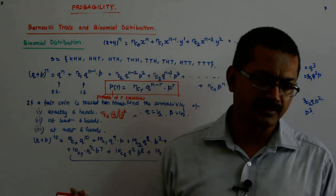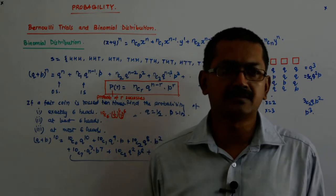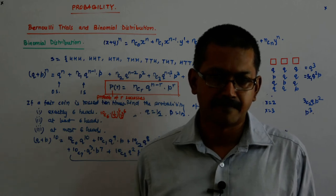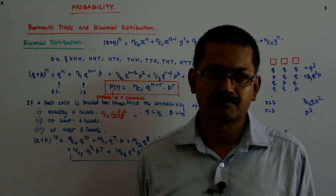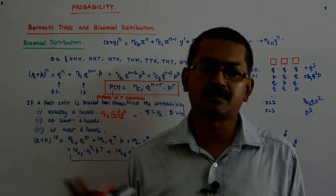Then the random variable if you understand, and the probability distribution, the mean, the variance, the Bernoulli trial and the binomial distribution. That is all the probability for us. And that will fetch you 10 clear cut clean marks.